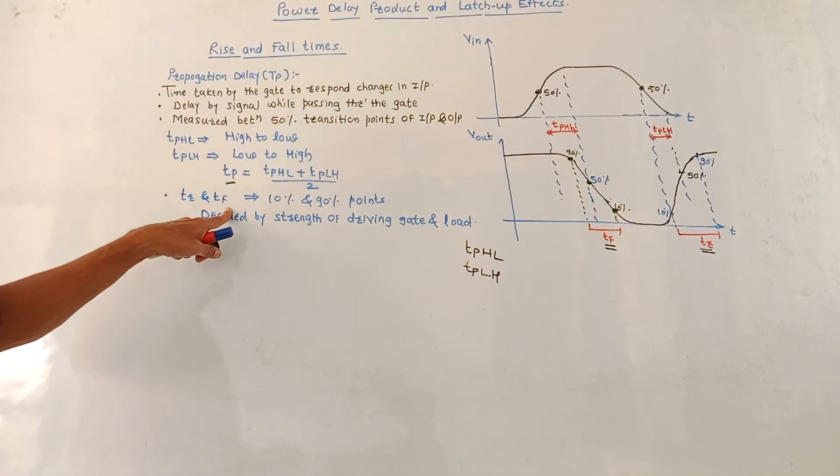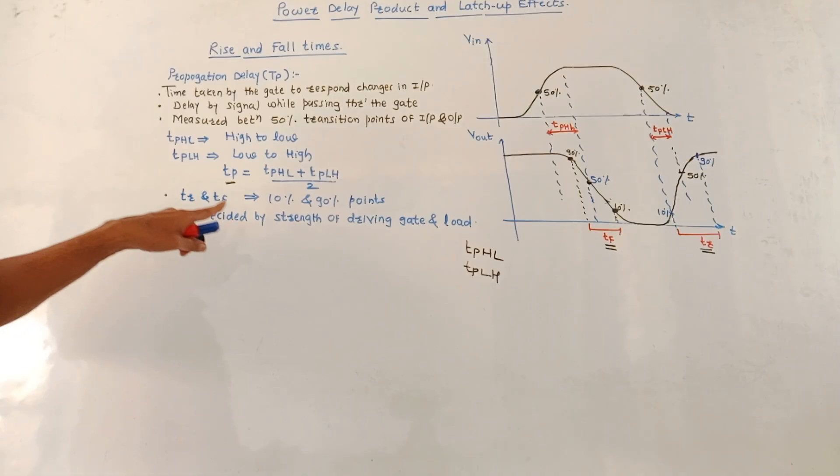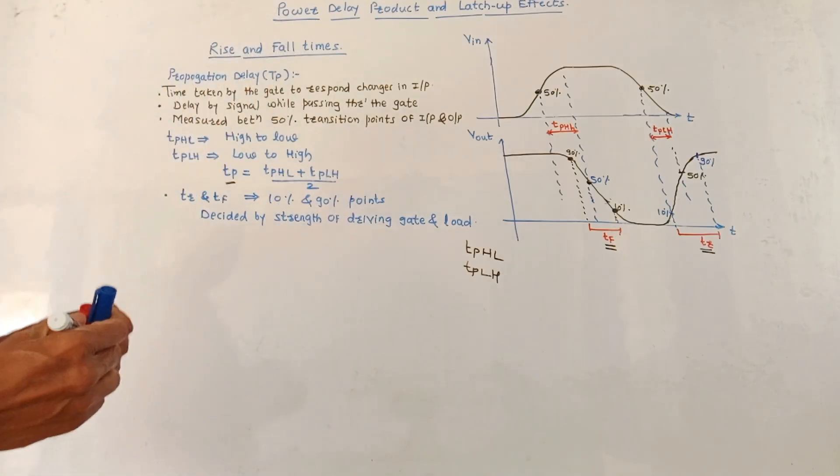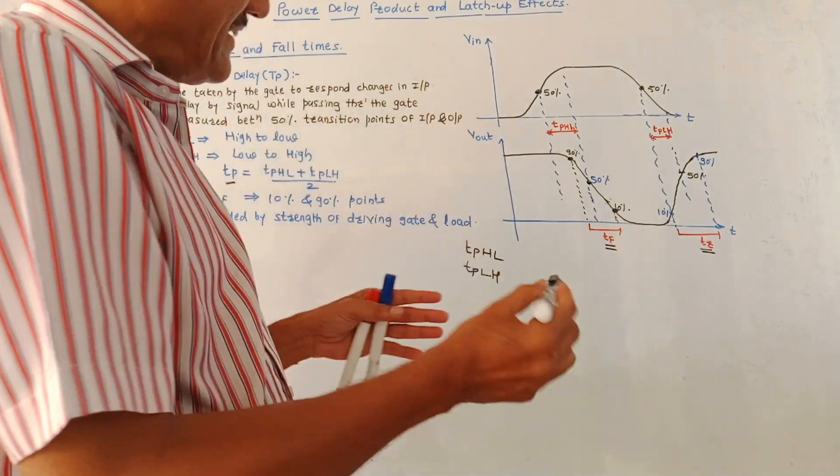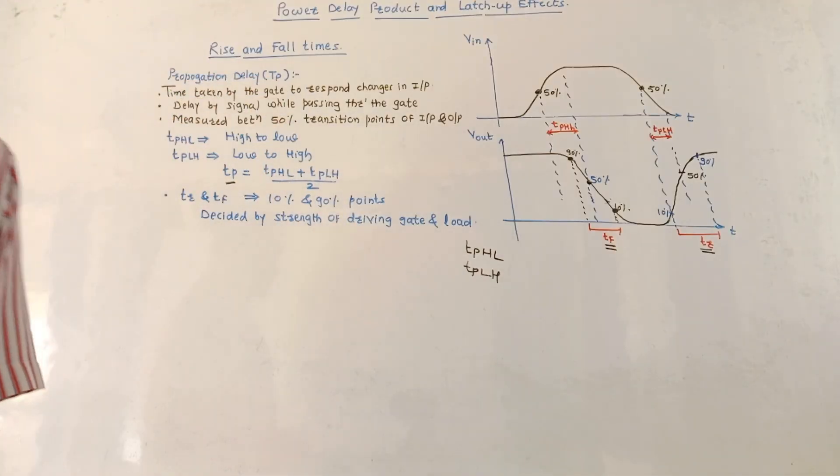This TR and TF, rise time and fall time are concerned related to 10% and 90% points in the output waveform. These rise time and fall times are decided by the strength of the driving gate and the load which is connected at the output. This is about the concept of rise and fall times.